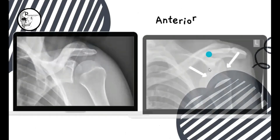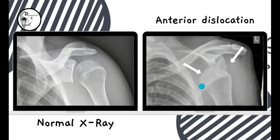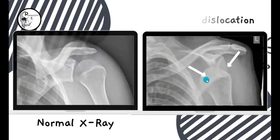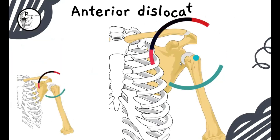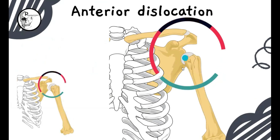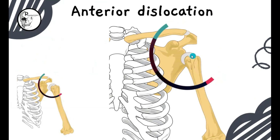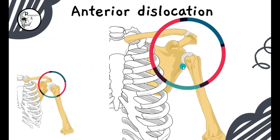To recap on the X-ray, you can see the head of the humerus coming anteriorly to the scapula — that is the anterior dislocation. The same thing is demonstrated in the illustrative diagram, where you can see the head of the humerus dislodged and coming in front of the scapula.